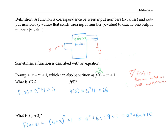When evaluating a function on a complex expression, it's important to keep the parentheses when you plug in for x, so that you evaluate the function on the whole expression. For example, it would be wrong to write f of a plus three equals a plus three squared plus one without the parentheses, because that would imply we were just squaring the three and not the whole expression a plus three.